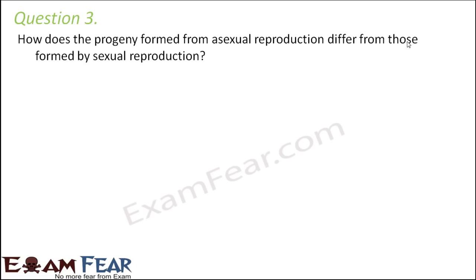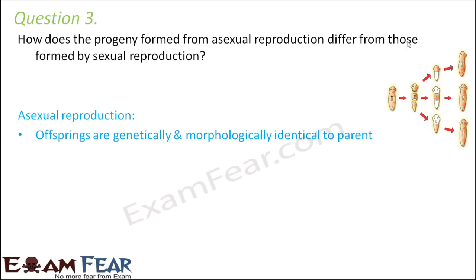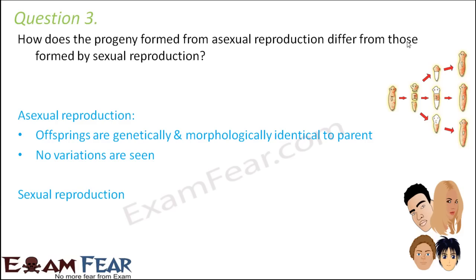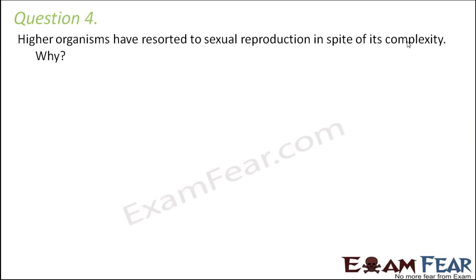Question number three: how does the progeny formed from asexual reproduction differ from those formed by sexual reproduction? In asexual reproduction, since only one parent is involved, the new individuals formed are exact copies of the parent — genetically and morphologically identical — so no variations are seen. In sexual reproduction, on the other hand, the offspring are not exactly identical; they may have some similarities with either parent, and variations are seen.